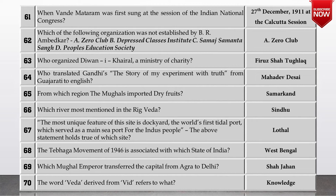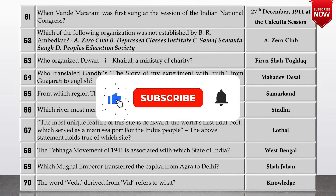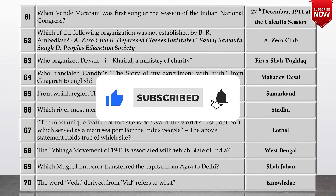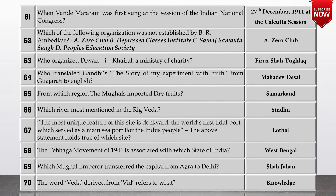Which of the following organizations was not established by B. R. Ambedkar? The options are: A. Zero Club, B. Depressed Classes Institute, C. Samaj Samanta Sangh, and D. People's Education Society. B, C, and D were all established by B. R. Ambedkar. So the answer is A — Zero Club — which was not established by B. R. Ambedkar.